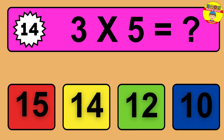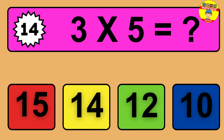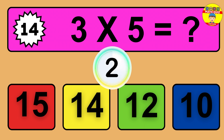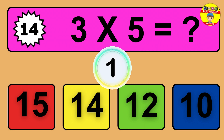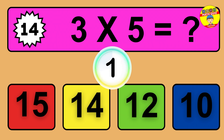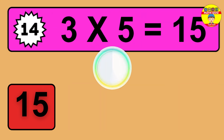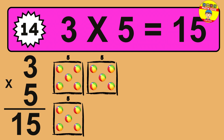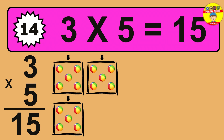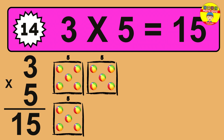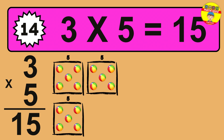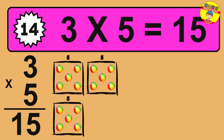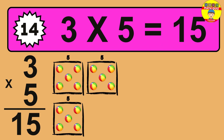Question 14. 3 times 5 equals what? The answer is 3 times 5 is 15. To calculate, we have 3 groups with 5 balls each one. So how many balls do we have? 15 balls.